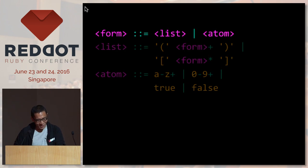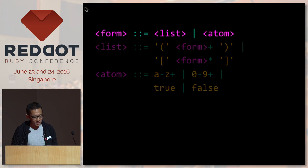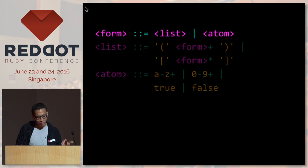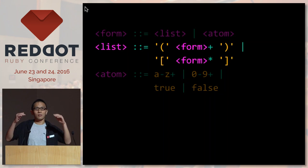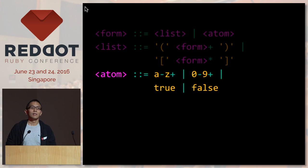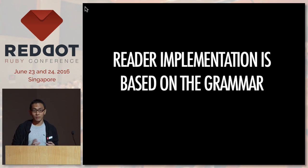Back to our grammar: for the first rule, a form or expression in Lisp can be expanded to either a list or an atom. A list is a bunch of forms enclosed in a pair of parentheses or square brackets. An atom is basically a bunch of characters, a bunch of numbers, or our true and false literals. The reader implementation is based on this grammar.